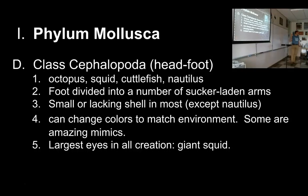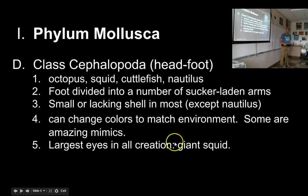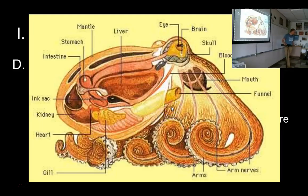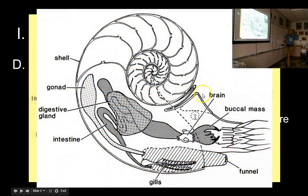Other octopuses are really talented at escaping through small holes. The largest eyes in all of creation belong to the giant squid — no dinosaur had bigger eyes. Here is a typical octopus — the visceral mass is in the abdomen, the mantle is the layer around it, there is no shell, and the foot has been divided into all these separate arms with the mouth right in the middle.